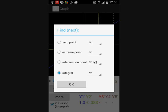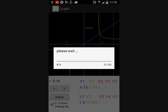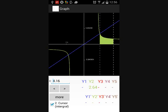You can see also other options like zero point or extreme point which you can choose between, but as I said, we are now only interested in calculating the integral of the second function. Take some time, still working. The result is 2.64.